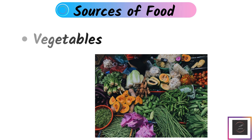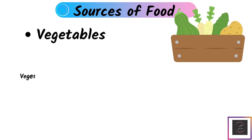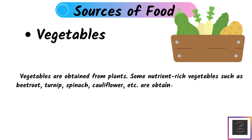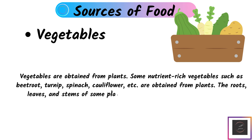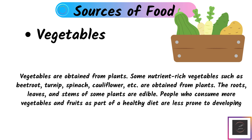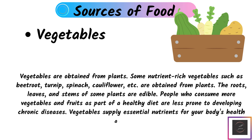Vegetables: Vegetables are obtained from plants. Some nutrient-rich vegetables such as wheat root, turnip, spinach, and cauliflower are obtained from plants. The roots, leaves, and stems of some plants are edible. People who consume fruits and vegetables as part of a healthy diet are less prone to developing chronic diseases. Vegetables supply essential nutrients for your body's health and upkeep.